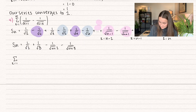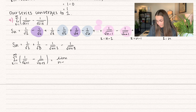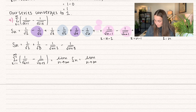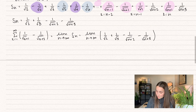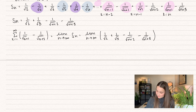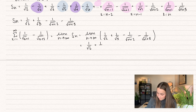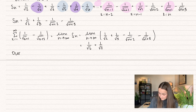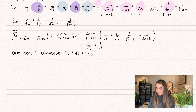To find our actual series we take the limit of our partial sum — the limit as n goes to infinity. Those square root terms in the denominator get really big, so those whole terms go to 0. We're left with 1 over √2 plus 1 over √3 plus 0 plus 0. So our series converges to 1 over √2 plus 1 over √3.